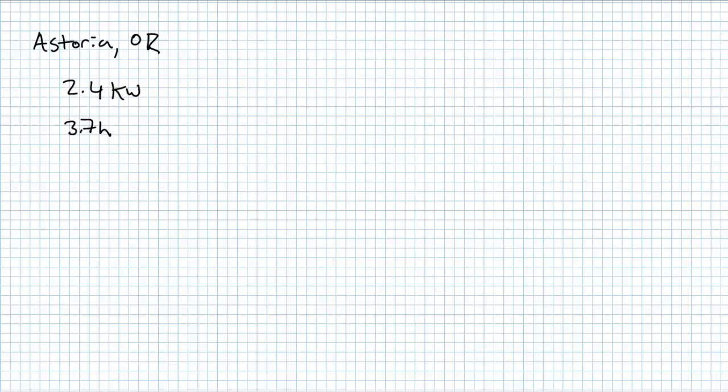Regardless, this average value of 3.7 hours of peak sun a day is backed by 30 plus years of rigorous data collection and analysis. So we're just going to go with it.